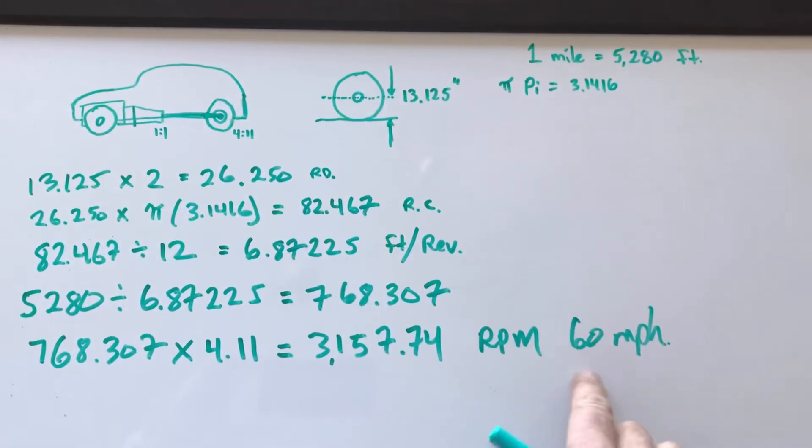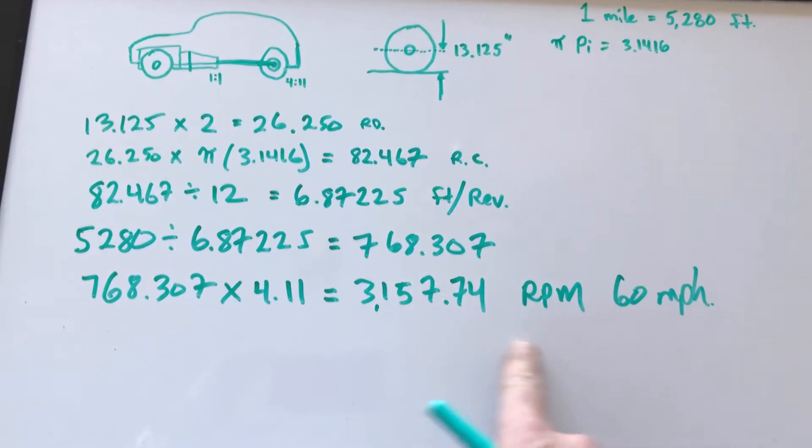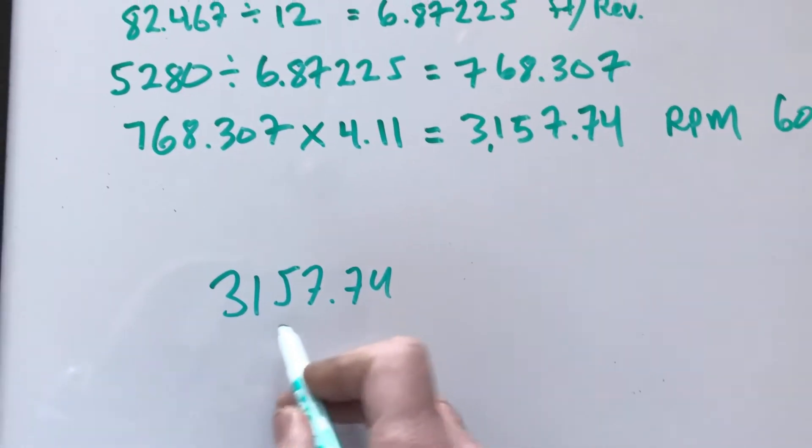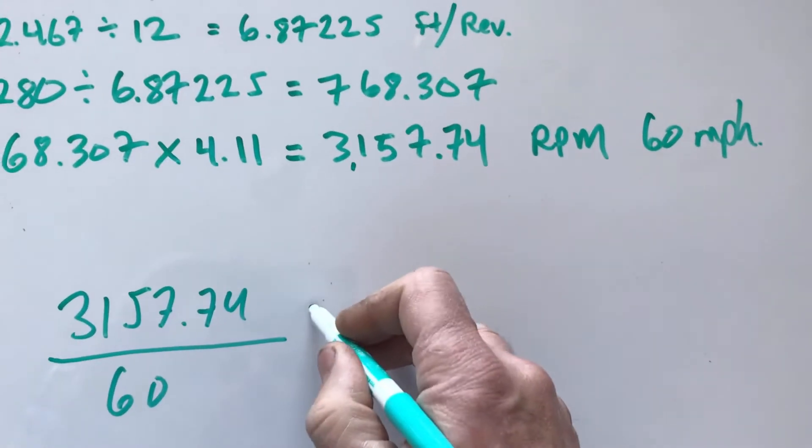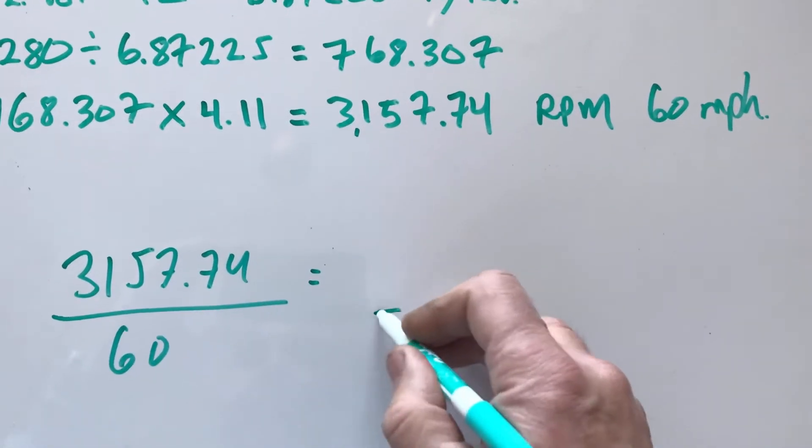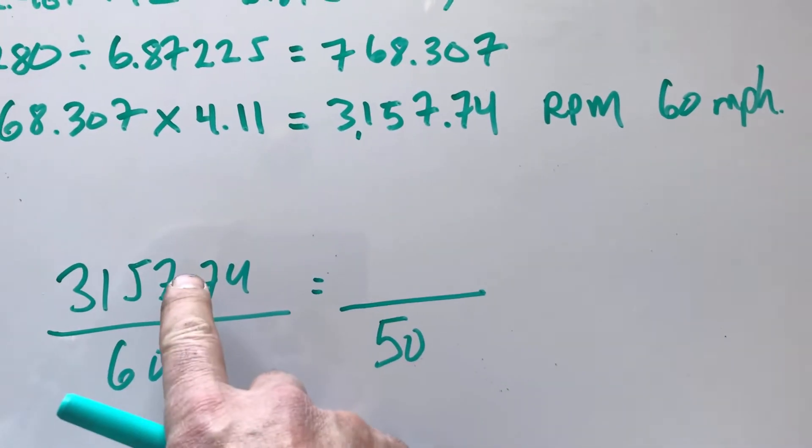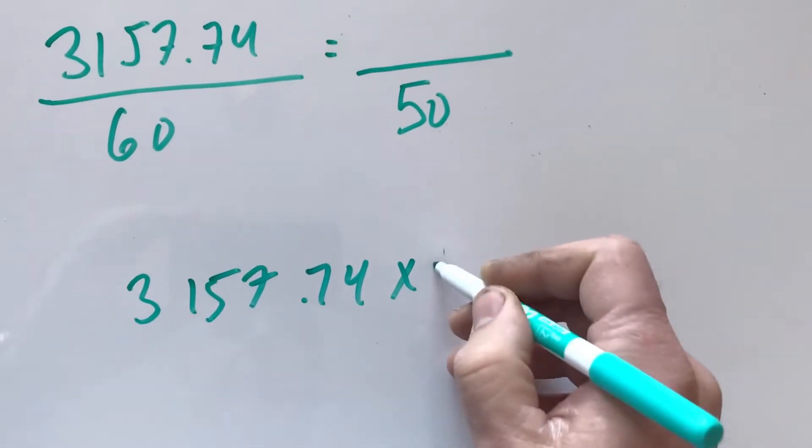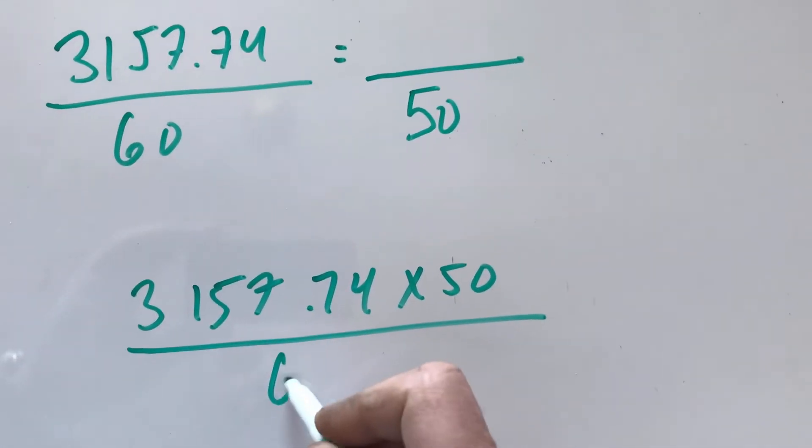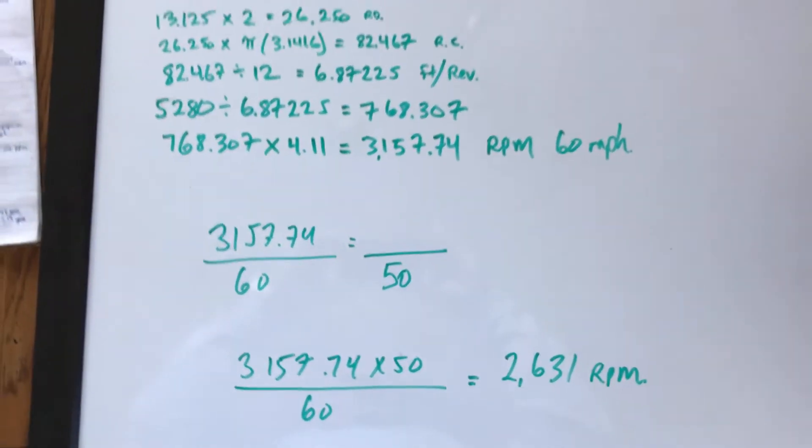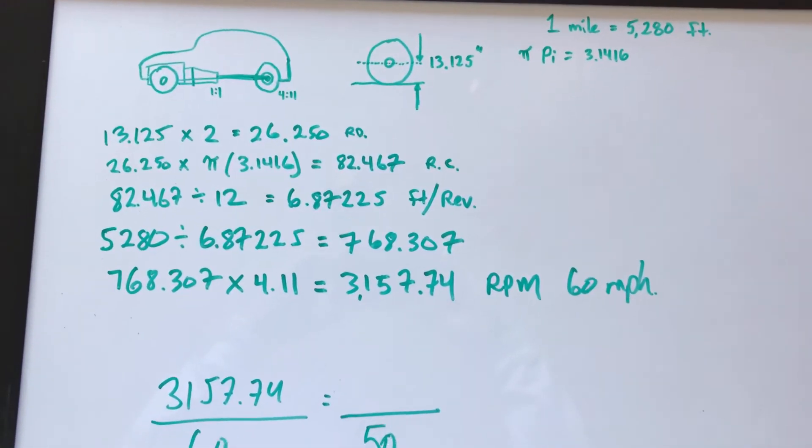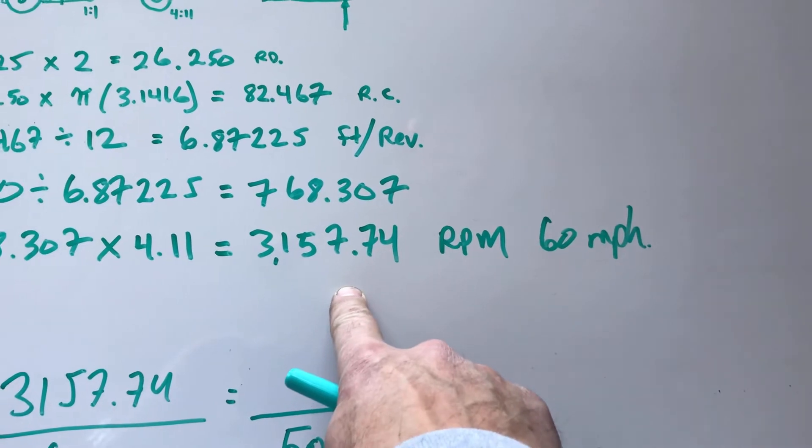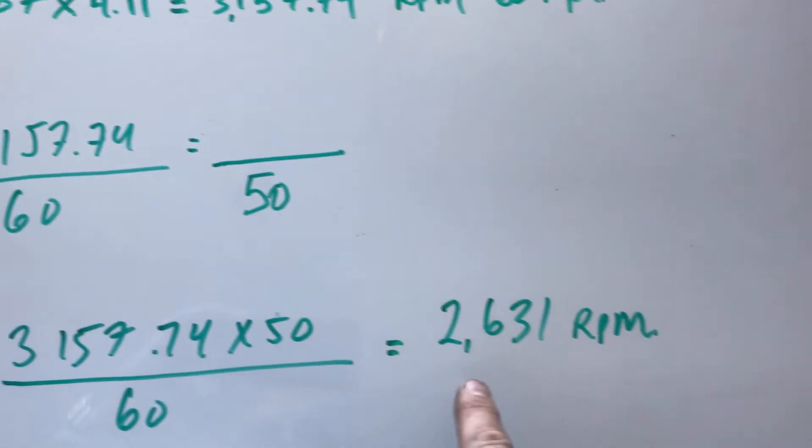Next, let's assume we want to try and figure out what our RPM will be at 50 or 55 miles per hour. We take this RPM 3,157.74, that's 60 miles per hour, and we want to figure out what it is at 50 miles per hour. So we take 3,157.74 times 50 and then divide that by 60. So 60 miles per hour my engine's turning 3,157 RPM. At 50 miles per hour I'm turning 2,631.